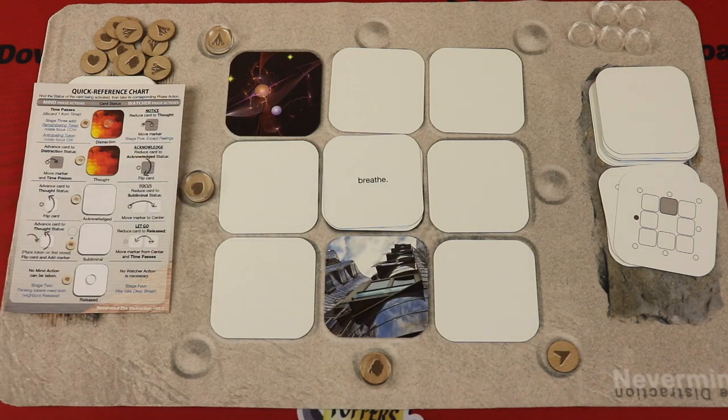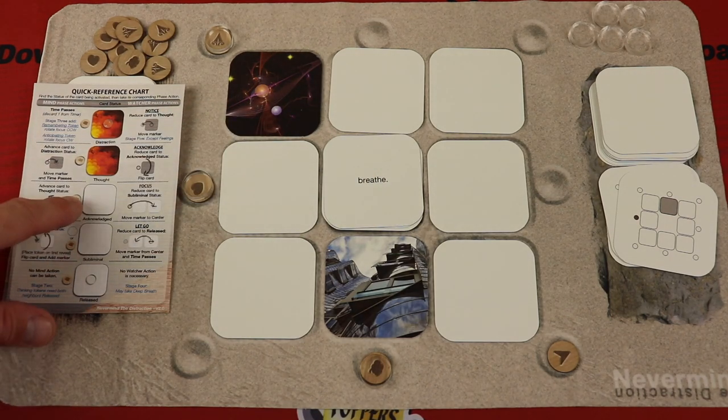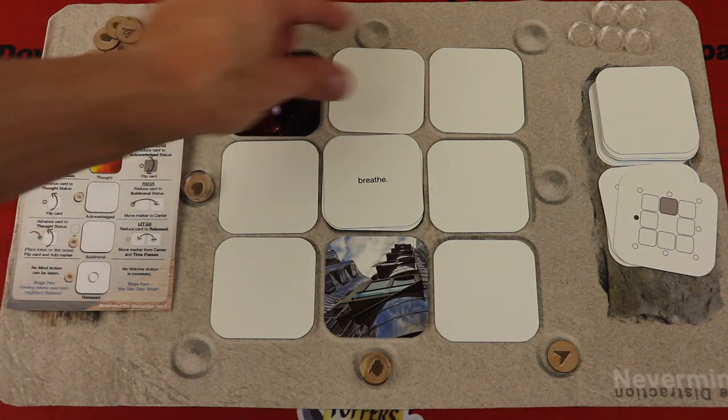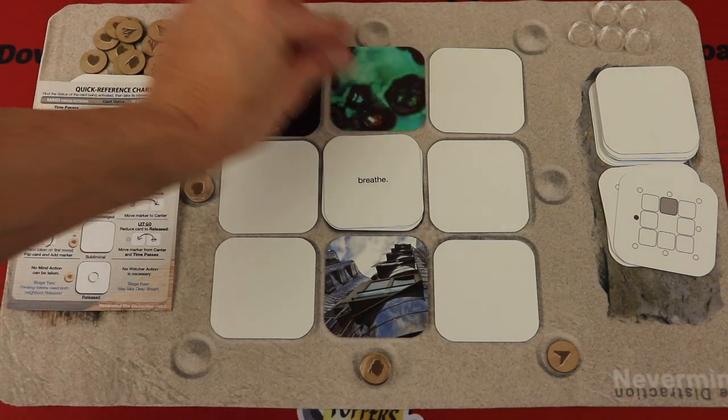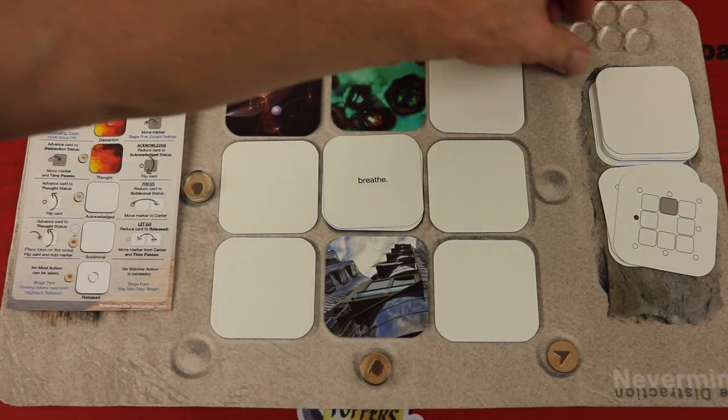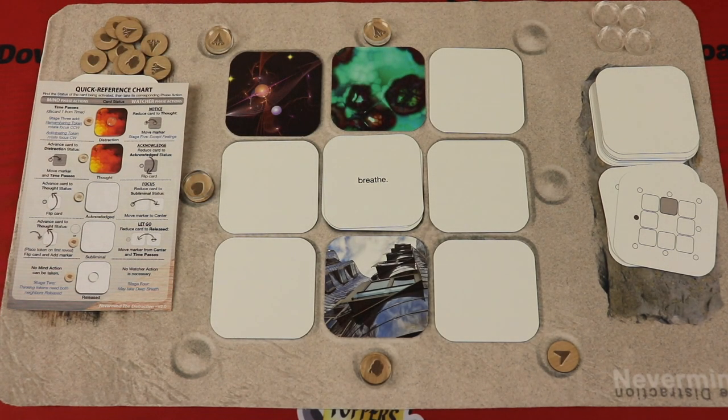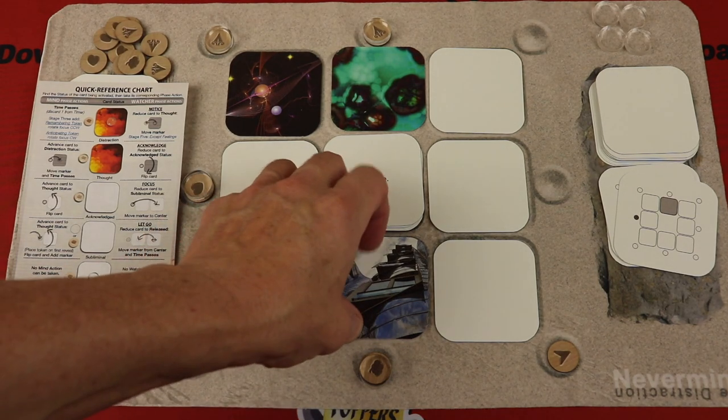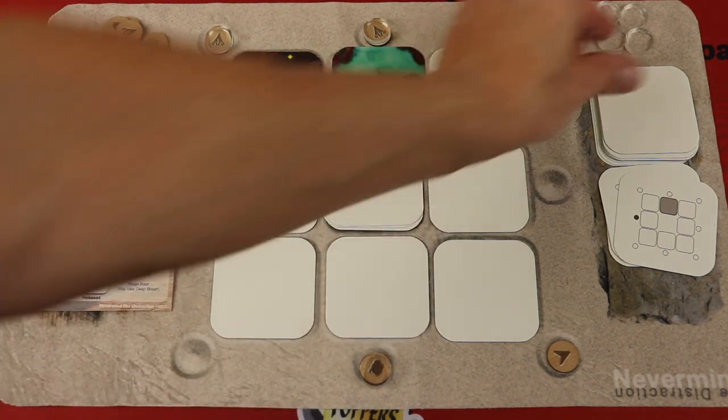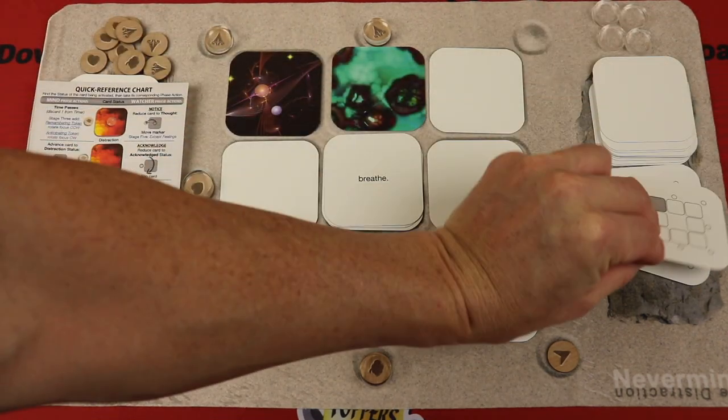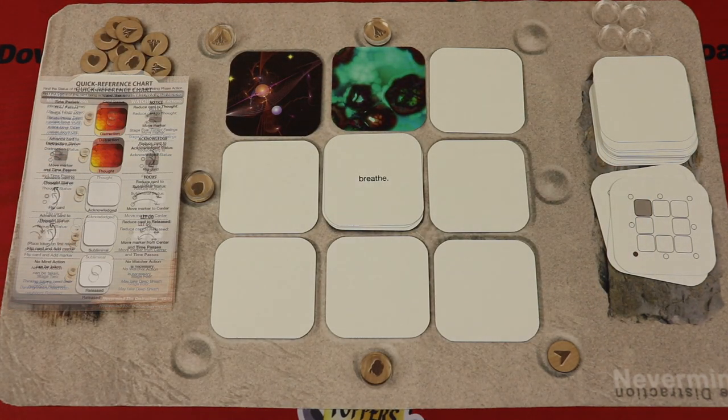So it's going to activate that card. Now right now it's subliminal. It doesn't go to acknowledge, it jumps right to thought. So it is going to flip over. It's going to get a noting token, and it's going to get an awareness. So now maybe I flip this one from thought to acknowledged, and then we see what the mind does here. Oh, all right.